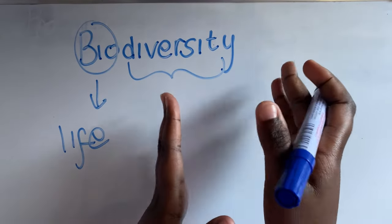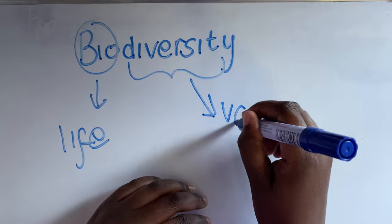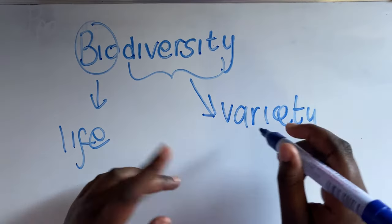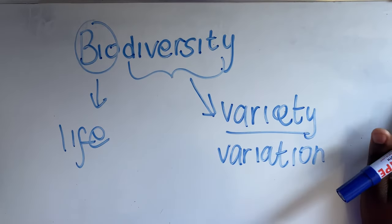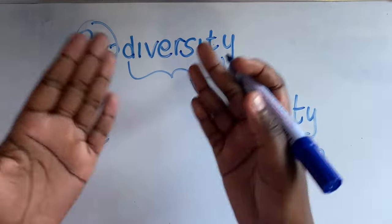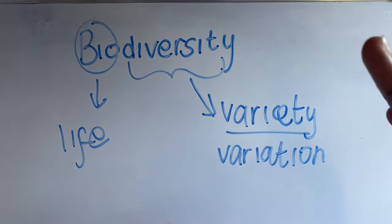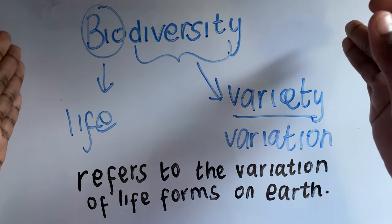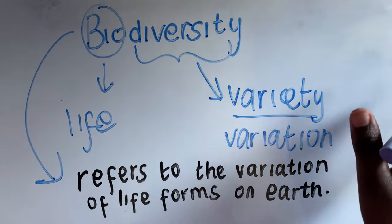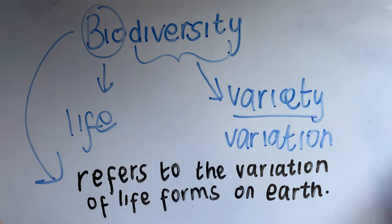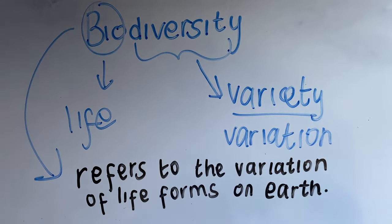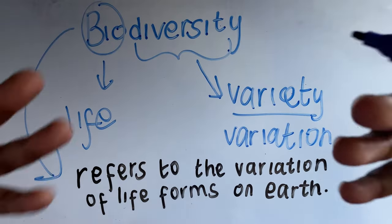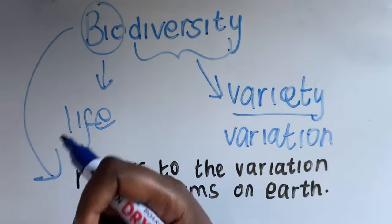And diversity means variety. So biodiversity refers to the variation of life forms found on earth. There are different kinds of life forms — the most simple being plants and animals — and we have tons of variety of them.